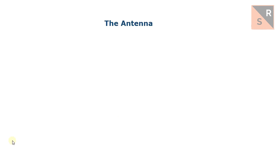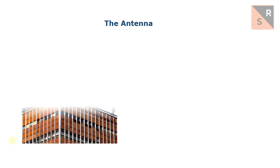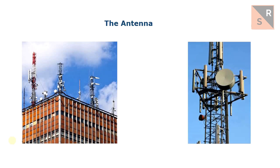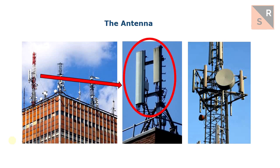Almost every time we walk in the street, we can see antennas on the roofs of buildings or on towers like this one. If you could make a zoom, we would be able to see the antennas clearly, as we can now. But what is an antenna after all, and what does it do?